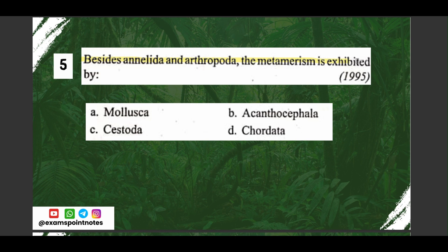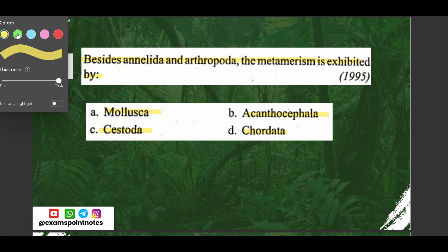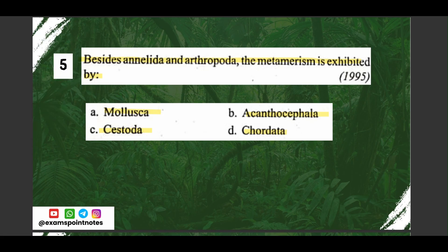Question number five: besides Annelida and Arthropoda, metamerism is exhibited by — options are: A) Mollusca, B) Acanthocephala, C) Cestoda, D) Chordata. The correct option is option D, Chordata.